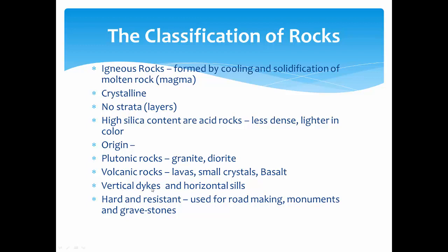There are also vertical dikes and horizontal sills. If there is a vertical fissure and magma comes and solidifies in it, it forms a vertical dike. Sills are formed when lava gets solidified below the Earth's crust in a horizontal position. Igneous rocks are very hard and resistant, and are generally used for making roads and gravestones.